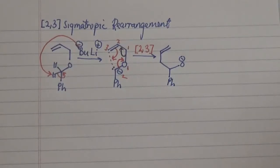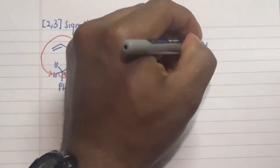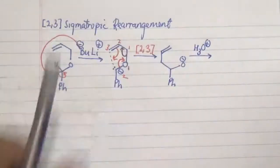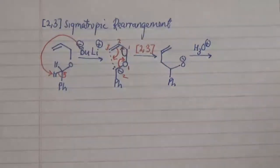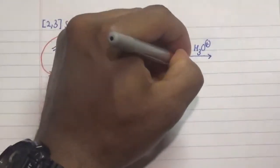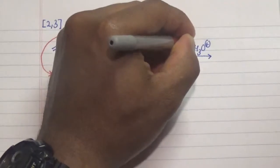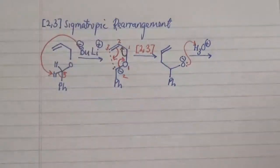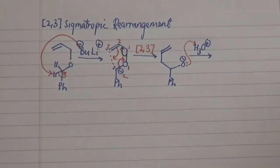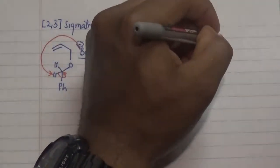Now if you subject this intermediate to an acidic environment, what happens next is that the negatively charged oxygen picks up a proton, and then what we get is the formation of our hydroxy allyl product.